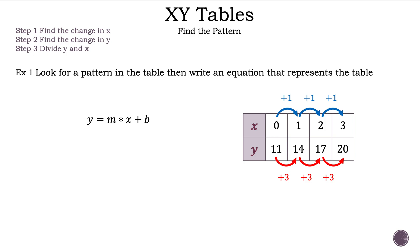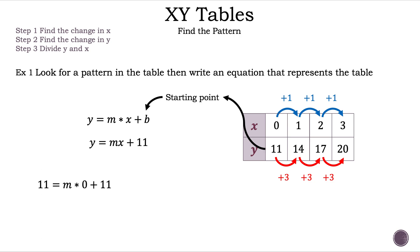which is Y is equal to MX plus B. Luckily, we have our Y-intercept, which is 11, which is our starting point because X is equal to 0. So now we can substitute 11 for B. So now we have Y is equal to MX plus 11. How do we think we find M? That's right — we can use the points. Let's start with the point (0, 11). Now we can substitute 0 for X and 11 for Y. So we have 11 is equal to M times 0 plus 11. And M times 0 is 0. So we have 11 is equal to 11. Unfortunately, that doesn't tell us anything.